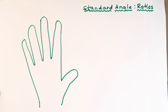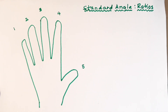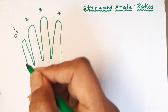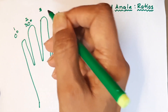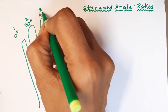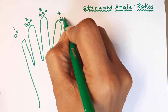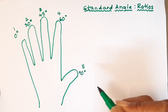We are going to number the fingers, starting with our little finger going up to our thumb, and we number them one, two, three, four, five. Number one becomes zero degrees, number two becomes 30 degrees, number three becomes 45 degrees, number four becomes 60 degrees, and number five becomes 90 degrees.